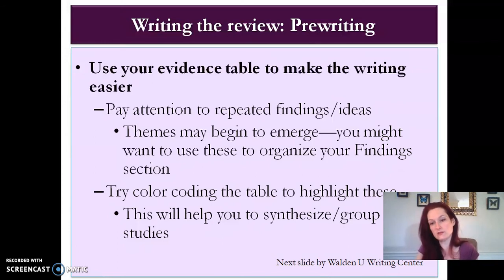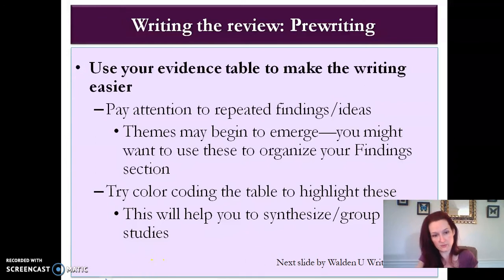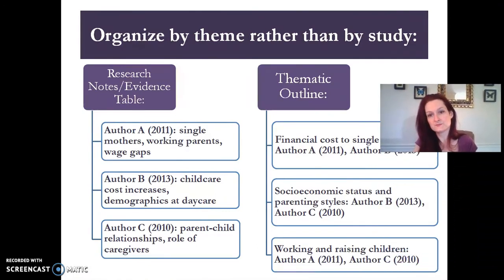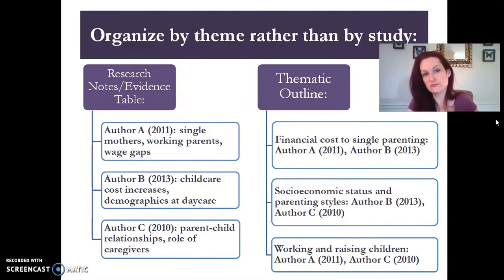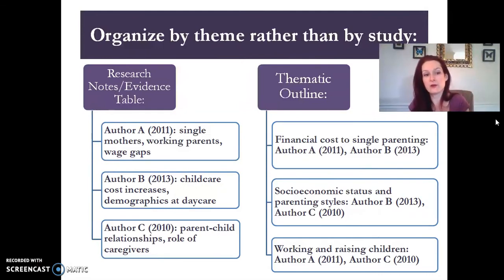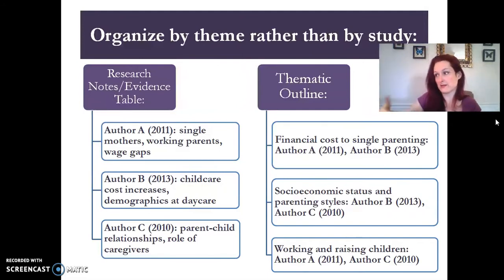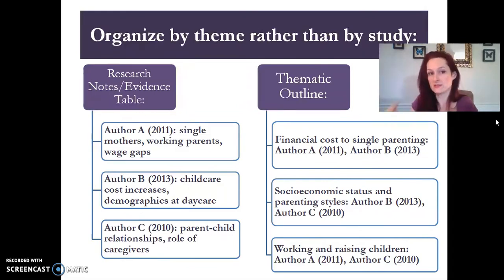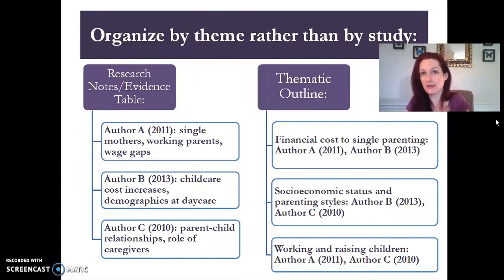The next slide is from the Walden University Writing Center's website — they have a wonderful presentation on lit reviews and that's where I got this slide. Part of synthesizing is that you want to organize your literature review by theme or by finding rather than by study. You're not going to start a paragraph by saying 'a study by Jones and Doe found this, and a study by Wu and Rodriguez found this.' You're not going to go study by study. That would be an annotated bibliography, which is just a summary of every study. A literature review is a synthesis, not a summary — it's a thematic review.